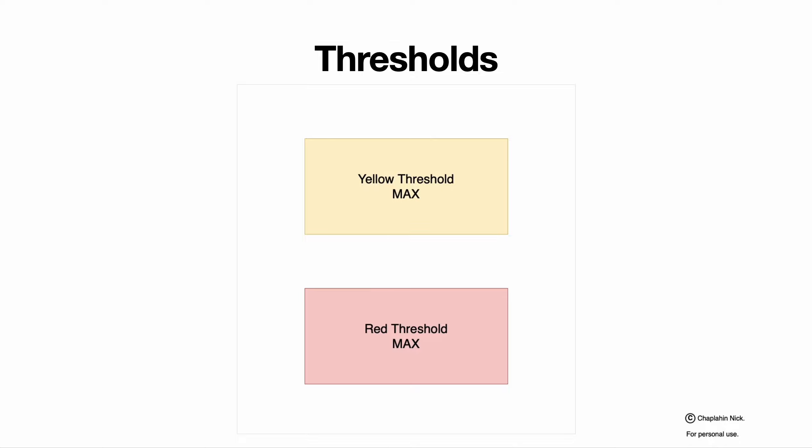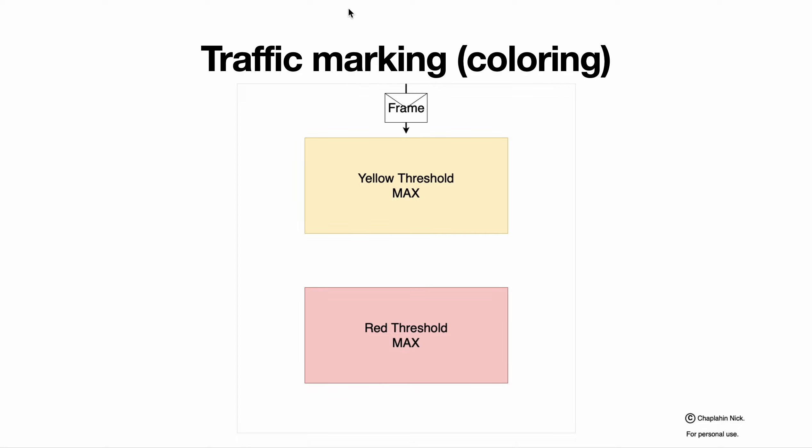This condition is threshold decreased to minimum. When system starts, yellow threshold as a number equals maximum value and red threshold as a number equals maximum value. Then two parallel processes happen to those thresholds. One is decrement. Traffic is received and yellow threshold, if it has enough value, is decreased by the amount of this packet.